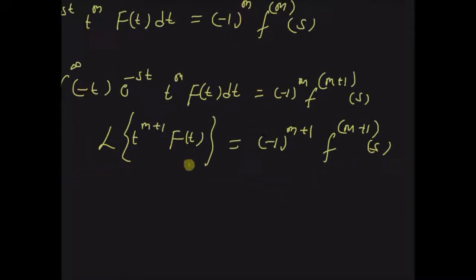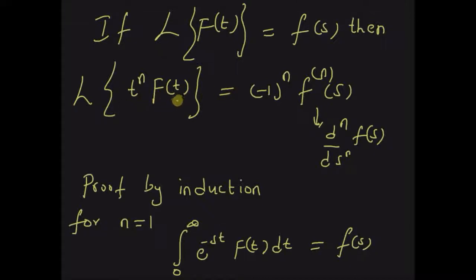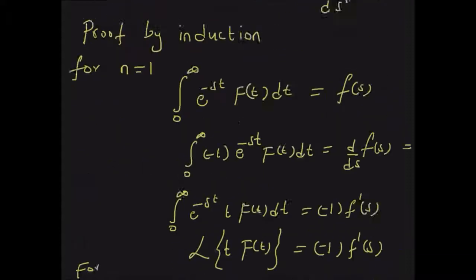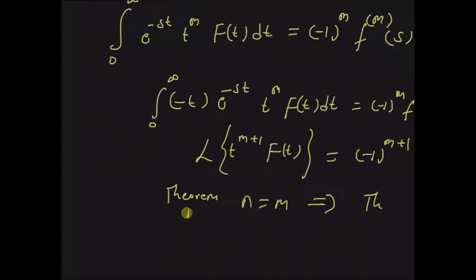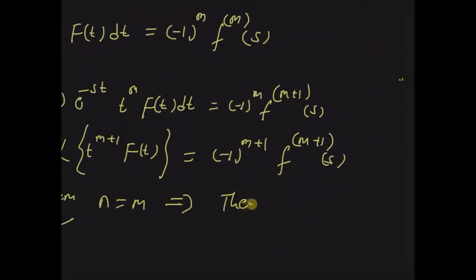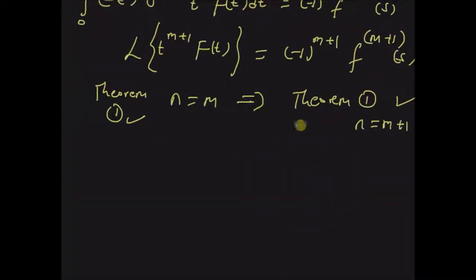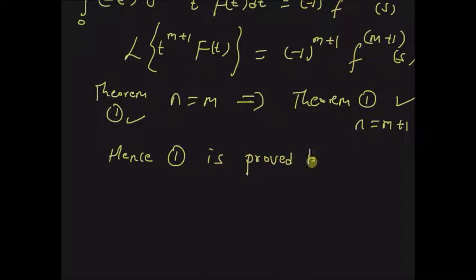Thus, when the theorem is valid for n equal to m, it is also valid for n equal to m plus one. That is, if the theorem — that the Laplace transform of t^n · f(t) is equal to (-1)^n times the nth derivative of F(s) — is valid for n equal to m, then it is also valid for n equal to m plus one. Since it is valid for n equal to one and two, this proves the theorem by mathematical induction. Hence the theorem is proved by induction.